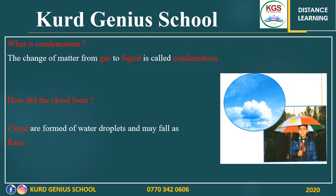How are clouds formed? Clouds are formed of water droplets and may fall as rain. Look at the picture — when the gas rises up to the sky, we will see the clouds. After the clouds, rain falls down. In this picture, we have a boy carrying an umbrella because he doesn't want to get wet from the rain.